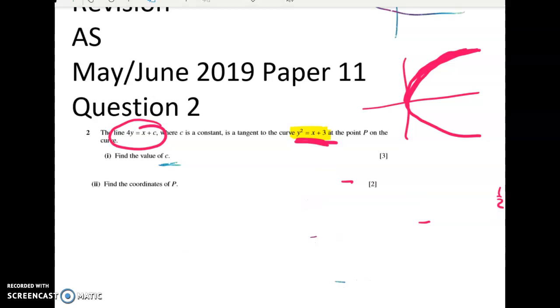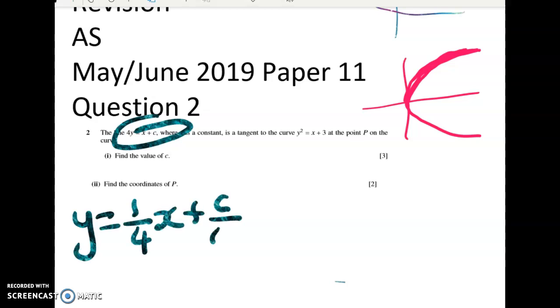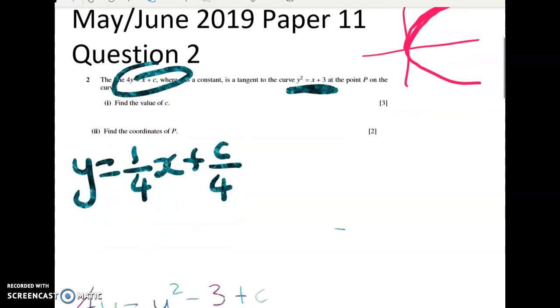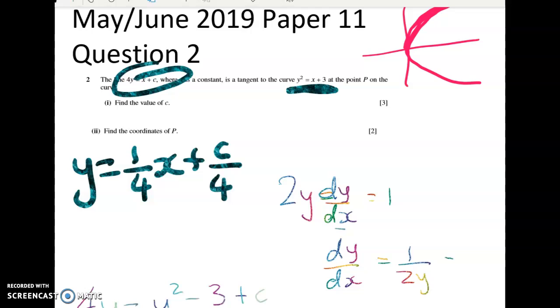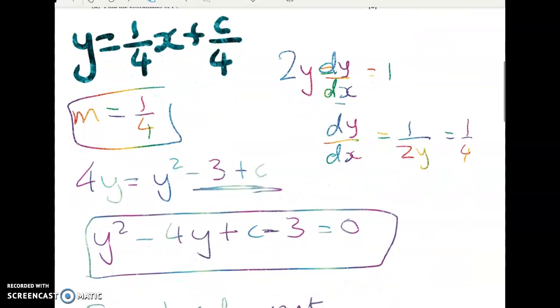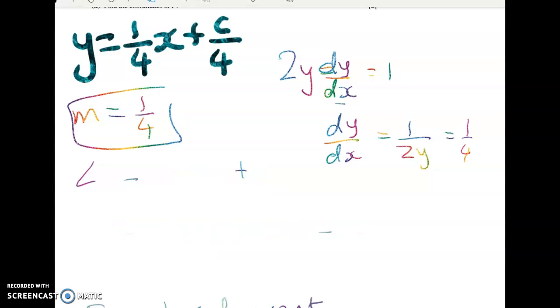We know in here that the tangent line must have a gradient of 1 quarter. So from this equation, we've got y equals 1 quarter x plus c on 4. And if we can just differentiate this quickly and solve it to have a gradient of 1 quarter, then we're done. So 2y dy by dx is equal to 1. Dy by dx is equal to 1 over 2y and that must equal 1 quarter because in here the gradient is 1 quarter. So using implicit, this problem gets a whole lot faster.